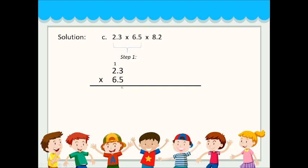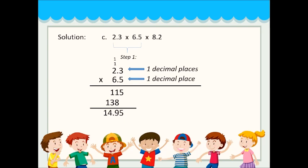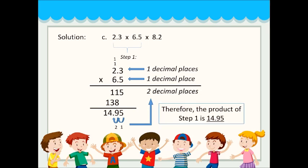5 times 3 is 15; 2 times 5 is 10, giving 115. Then 6 times 3 is 18; 6 times 2 is 12, plus 1 is 138. Adding these together we get 14.95. Each factor has one decimal place, so two decimal places total — 1, 2. The product of step 1 is 14.95.